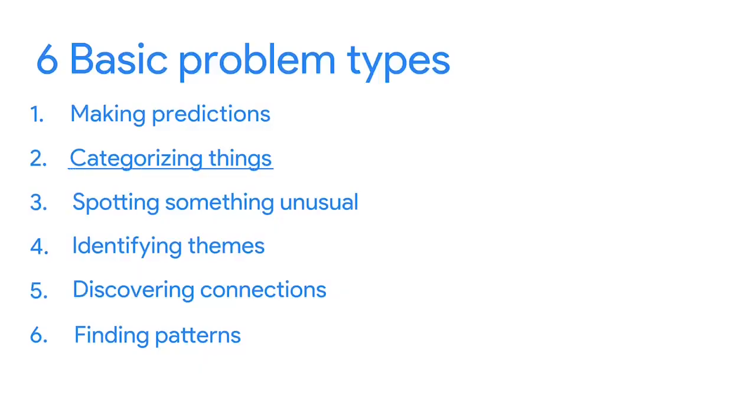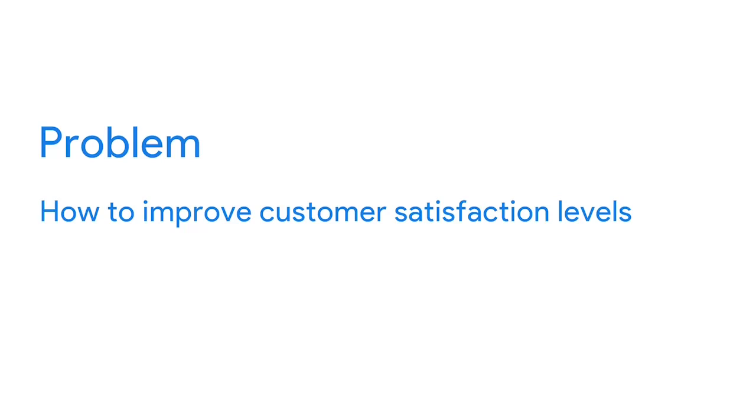Now let's think about the second problem type: categorizing things. If a business wants to improve its customer satisfaction levels, data analysts could review recorded calls to the customer service department and evaluate the satisfaction level of each caller. They could identify certain keywords or phrases that come up during the phone calls and then assign them to categories such as politeness, satisfaction, dissatisfaction, empathy, and more. Categorizing these keywords gives us data that lets the company identify top-performing customer service representatives and those who might need more training, leading to happier customers and higher customer service scores.